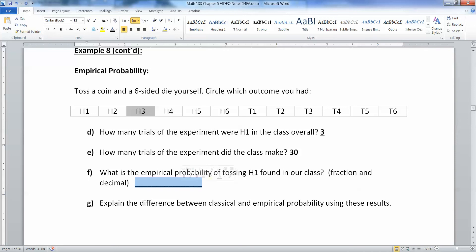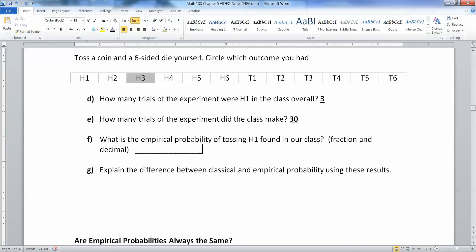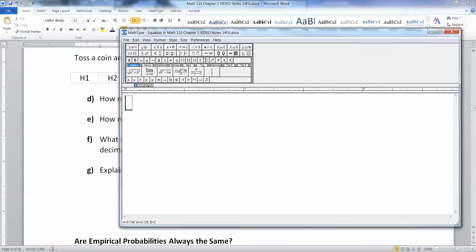So if that's the case, then what's the probability, the empirical probability of tossing H1 that was found in our class? Well, that would be 3 out of 10, which means 3 out of 30, which is 1 out of 10, which is 0.1. Either one of these would work.